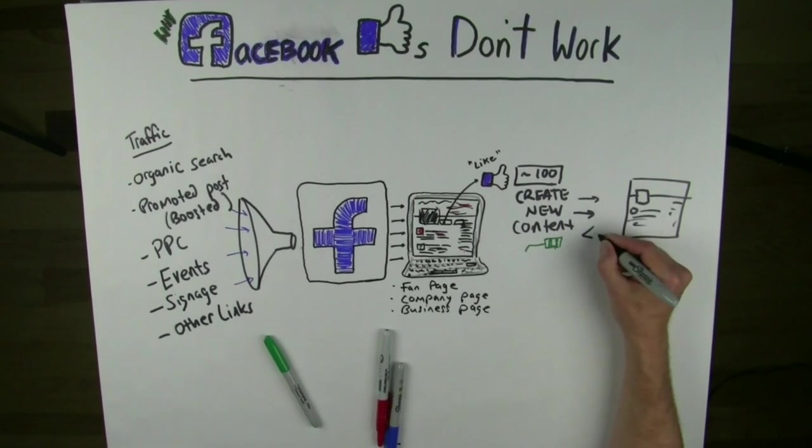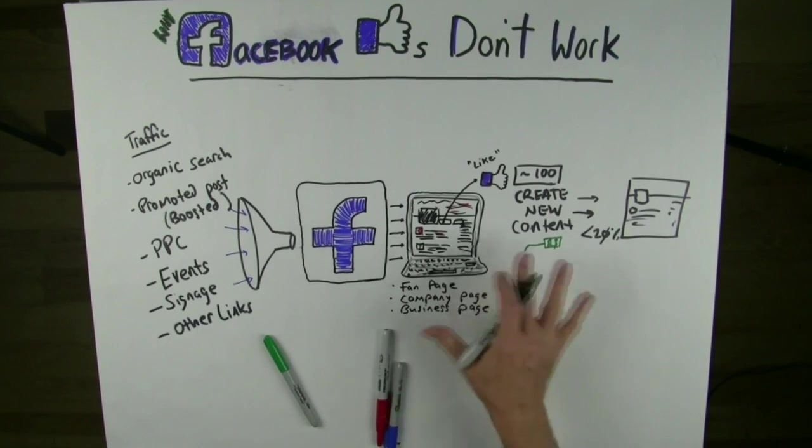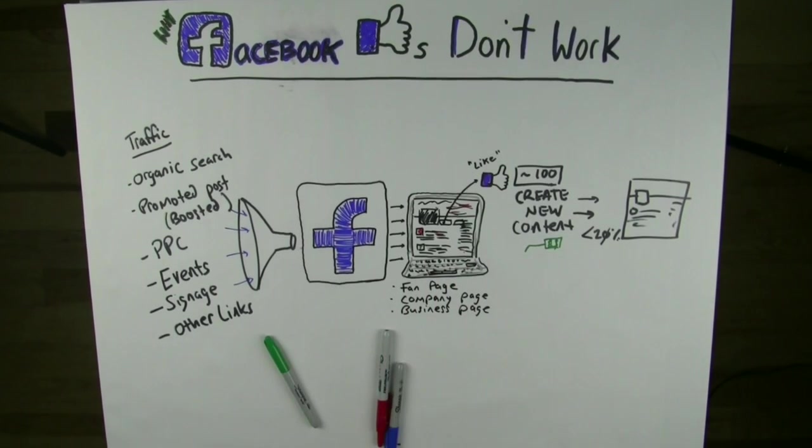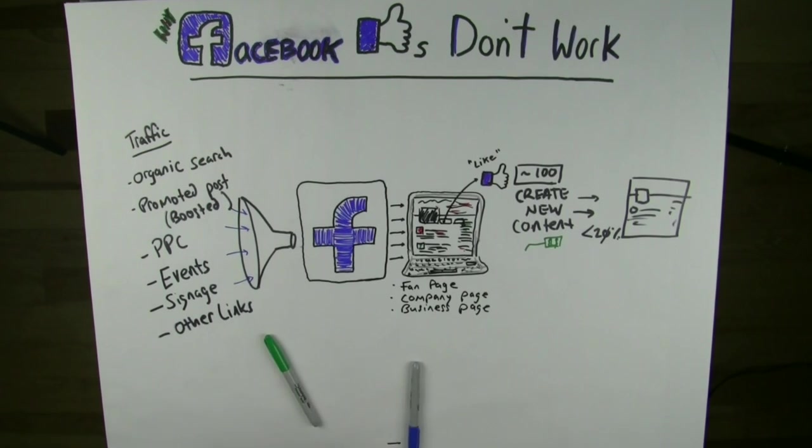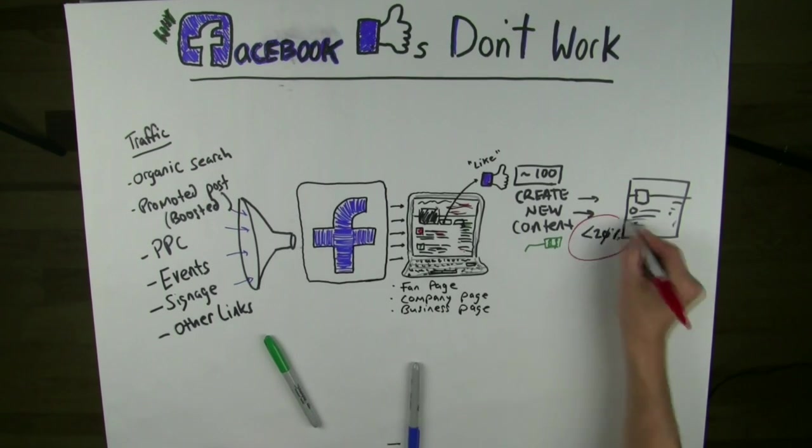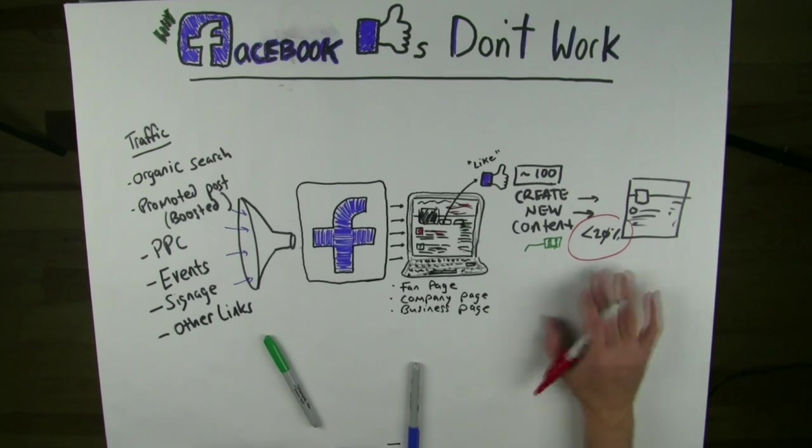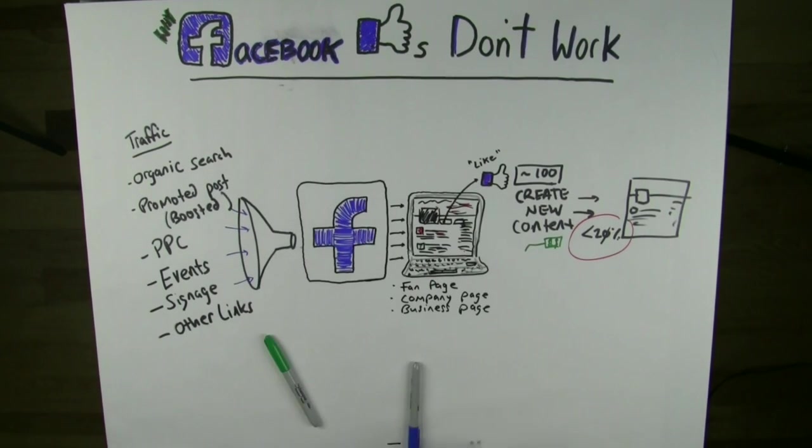So it really varies, and Facebook uses a lot of complex algorithms to do this. But let's just say that in a lot of cases it's less than 20%. If you push a post out to your followers, to your likers, less than 20% you can safely assume are going to actually see that content. And that's kind of frustrating because you've done all this work to get it there.